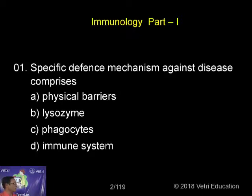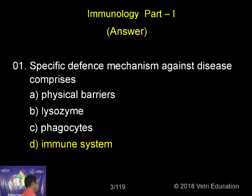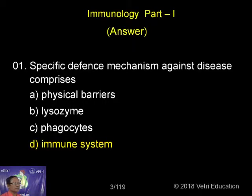The physical barriers, lysozyme, and phagocytes represent innate immunity — the one which is present right from birth. They are non-specific in nature. But we have some specific systems found in the body, for example antibodies, which constitute the specific defense mechanism.